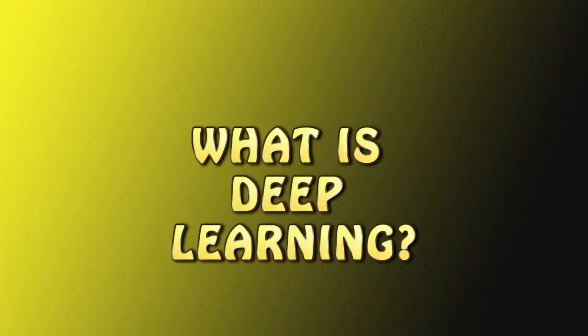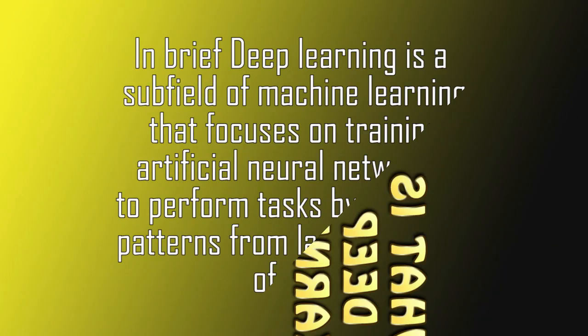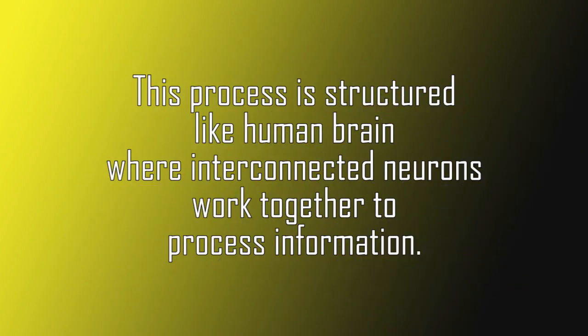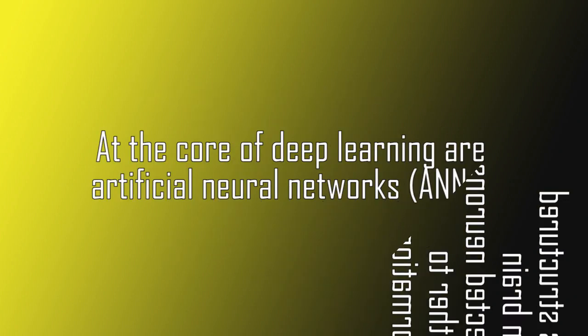What is deep learning? In brief, deep learning is a subfield of machine learning that focuses on training artificial neural networks to perform tasks by learning patterns from large amounts of data. This process is structured like the human brain, where interconnected neurons work together to process information.